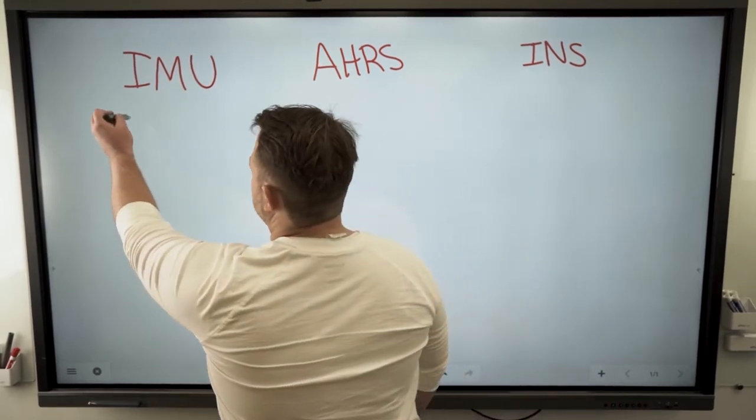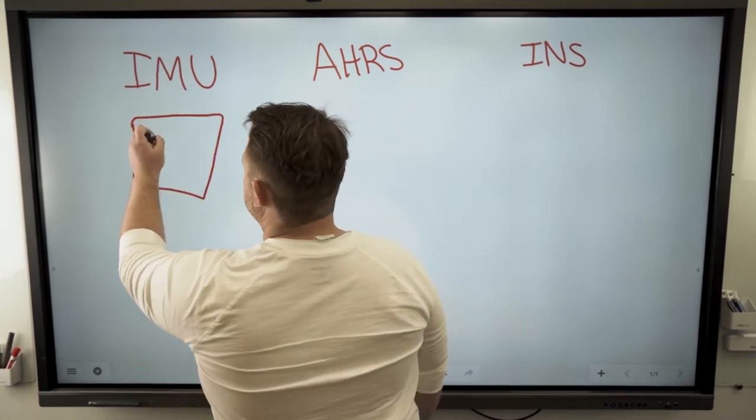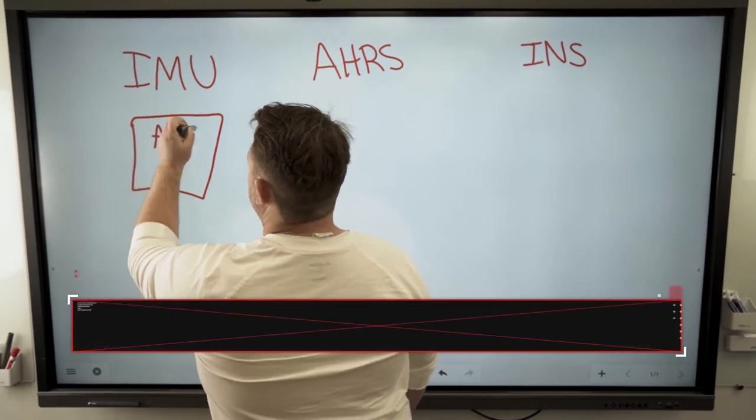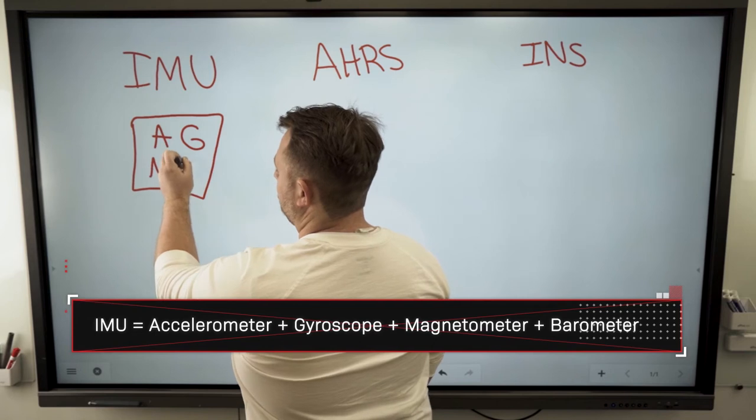The IMU is a sensor that has several different types of sensors inside of them. It has accelerometers, it has gyros, it has magnetometers, and it has barometers.